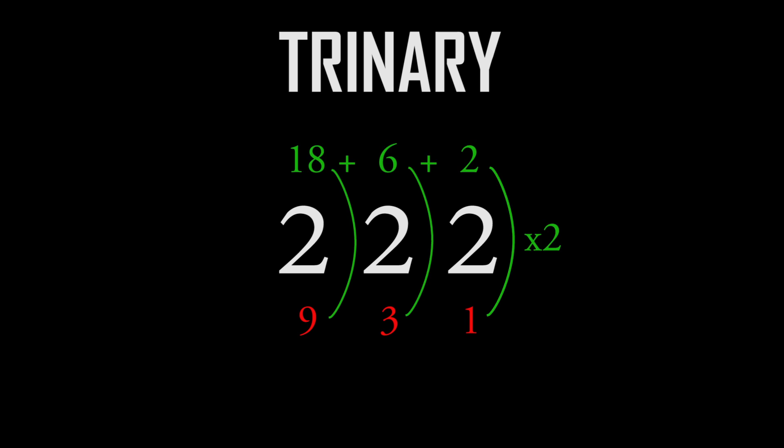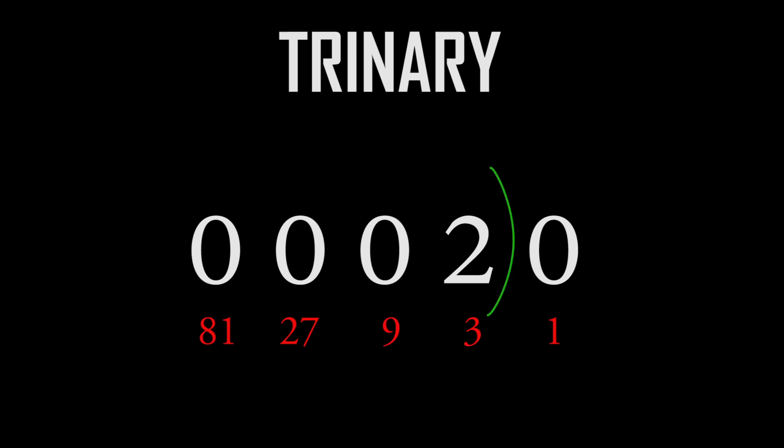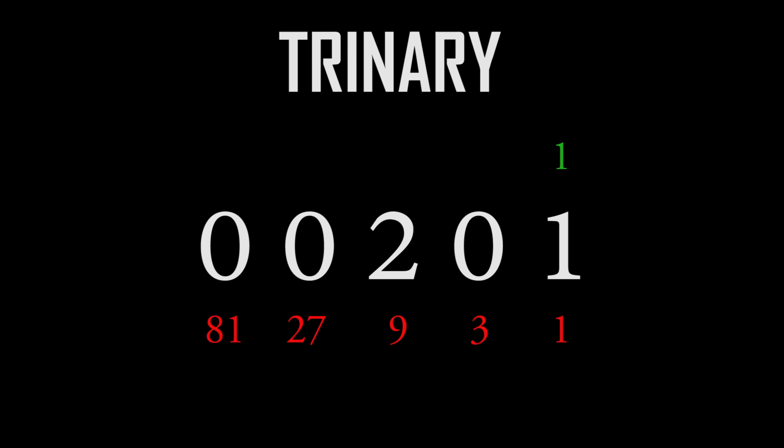It gets a bit more complex than binary when there's a two. If there's a two, you add up double the value of that digit. Let's say you have zero zero zero two zero — because the second digit's value is three, that means six, since three times two equals six. How about zero zero two zero one? Add up one, plus two times the nines place equals eighteen, so it equals nineteen.